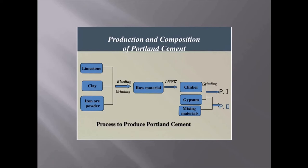In the dry process, calcareous materials like limestone are crushed and finely ground in ball mills and taken to the storage basin. Similarly, argillaceous materials like clay are crushed and finely ground in ball mills. Both materials are mixed in correct proportion and heated at 800°C, then taken to the storage tank, fed to the rotary kilns, and clinkers are formed. About 2–3% of gypsum is added and the clinkers are ground in ball mills again. After that, cement is formed and taken to the packing plant.